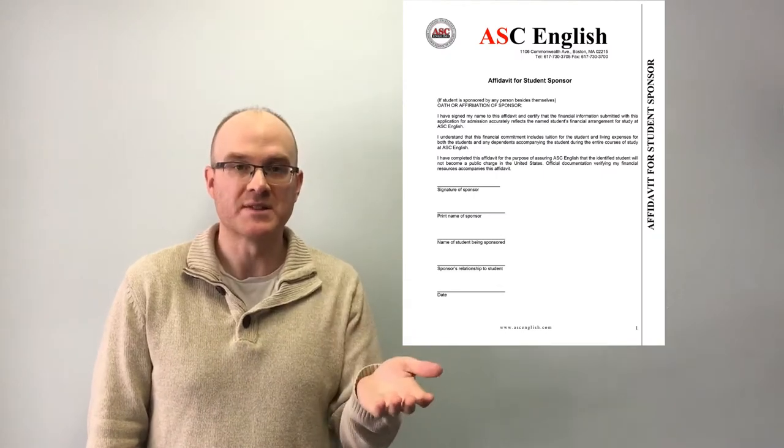So we have application, bank statement, passport. One more note about the bank statement. The bank statement can be from a sponsor. It's not normal that an 18 year old student is going to have $10,000 in their bank. It can be from your father, your mother, your grandfather, cousin. Basically, they would do an affidavit of support saying that they support you in the United States.